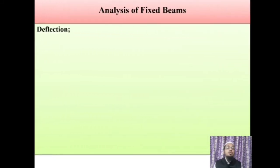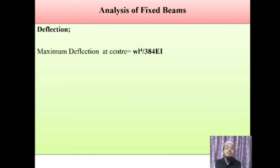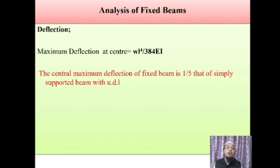Apart from this, you should know the deflection in such a case. For a simply supported beam subjected to UDL, the maximum deflection at midpoint is 5WL⁴/384EI. For a fixed beam subjected to UDL, the maximum deflection also occurs at midpoint and its value is WL⁴/384EI. This means the maximum deflection in a fixed beam is one-fifth of that in a simply supported beam under UDL — a useful fact for MCQ questions in examinations.